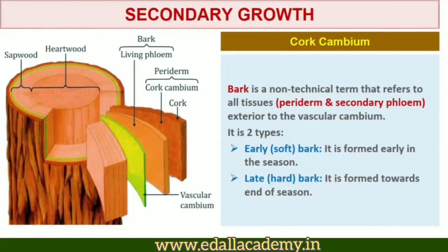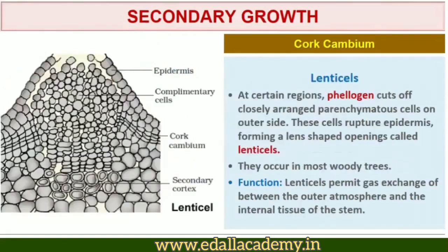Towards the end of the season, late or hard bark is formed. At certain regions, the phellogen cuts off closely arranged parenchymatous cells on the outer side instead of cork cells. These parenchymatous cells soon rupture the epidermis, forming lens-shaped openings called lenticels. Lenticels permit the exchange of gases between the outer atmosphere and the internal tissues of the stem. They occur in most woody trees.